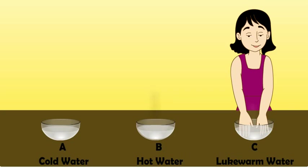We will find that the water in bowl C does not feel equally warm to both hands. To the right hand, which was earlier in cold water, the lukewarm water appears hot. But to the left hand, which was earlier in hot water, the lukewarm water appears cold. This is impossible because the same water cannot be hot and cold at the same time — our sense of touch is misinforming us in this case.